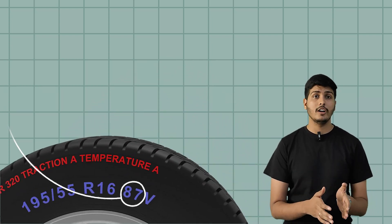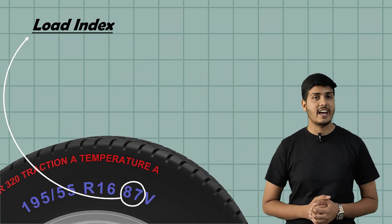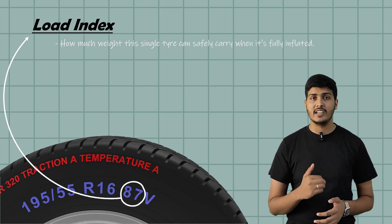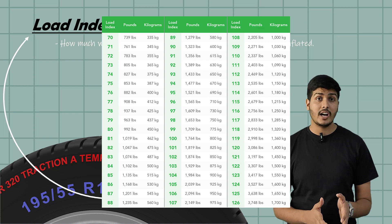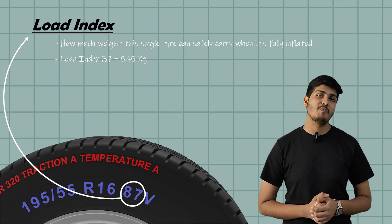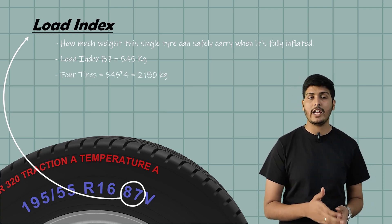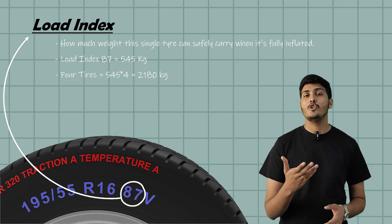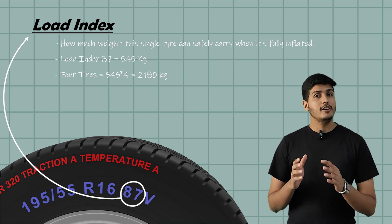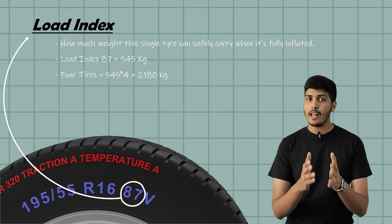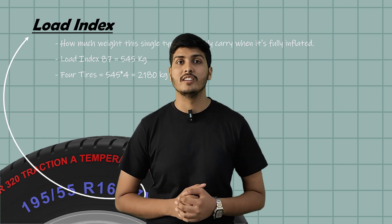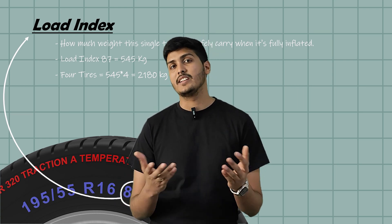Next is 87. This is called load index. It tells how much weight a single tire can carry when it is fully inflated. Now 87 doesn't mean 87 kg. There's a standard chart for this and according to that chart, a load index 87 means the tire can handle 545 kilograms. That's per tire. So a car with 4 tires will have a load capacity of 4 times 545 kg which is 2180 kg. This number is super important if you are carrying passengers, luggage or driving a loaded vehicle. Using a tire of lower load index than your car recommends can be dangerous. The tire might overheat, wear out faster or even burst under heavy load. So 87 tells you the strength of tire and how much weight it can carry safely.